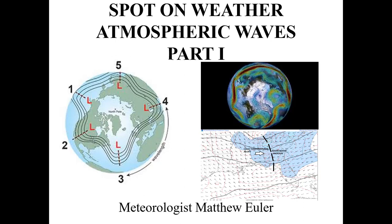Very important in the field of meteorology. The title slide tonight shows a couple different waves. The image on the left — the red L's indicate upper-level lows, and the dashed lines associated with those red L's are associated with troughs, or a bending of the jet stream. In this case we have five total long waves on this particular image, numbered one through five.